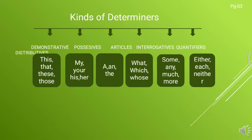Kinds of determiners: Demonstrative — this, that, these, those. Possessive — my, your, his, her. Articles — a, an, the. Interrogatives — what, which, whose. Quantifiers — some, any, much, more. Distributive — either, each, neither.